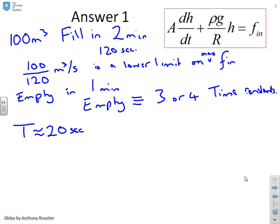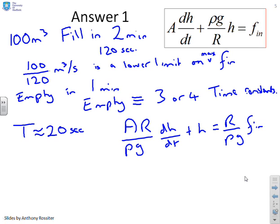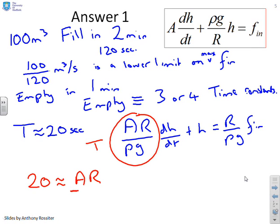So the next thing is to say, alright, let's put this model in time constant form. And what you're going to get is a r over rho g dh dt plus h equals r over rho g into f in. And clearly this term here is the time constant. So what you get from this specification is that 20 is approximately equal to a r over rho g. Now rho we know in general 10 to the 3 g is about 10.